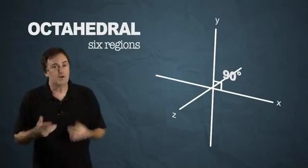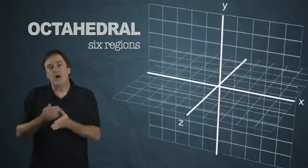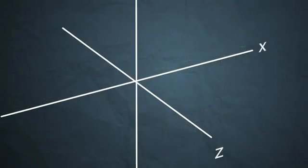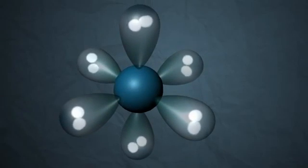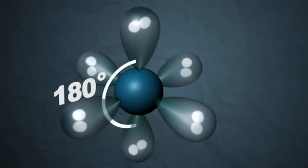Everything's 90 degrees apart or 180. It's like the x, y, and the z axis of three-dimensional space. You put one atom in each space, you get six total. Bond angles are either 90 or they're 180.